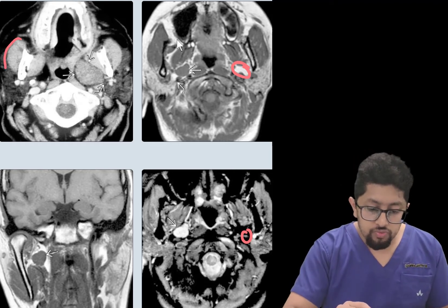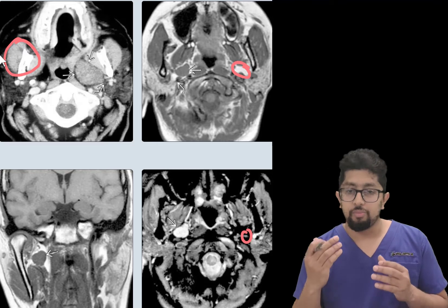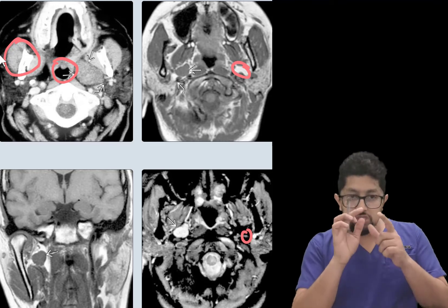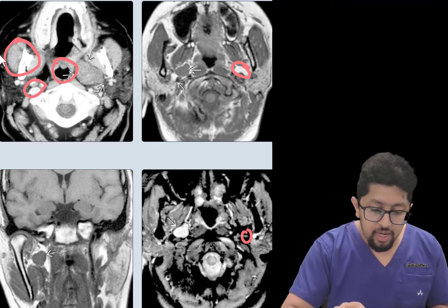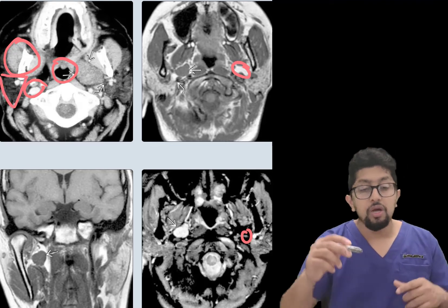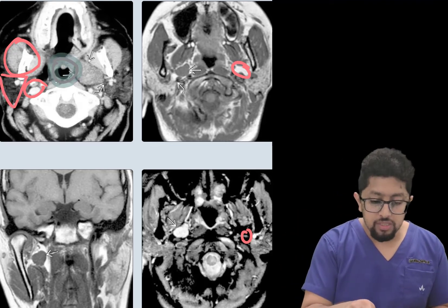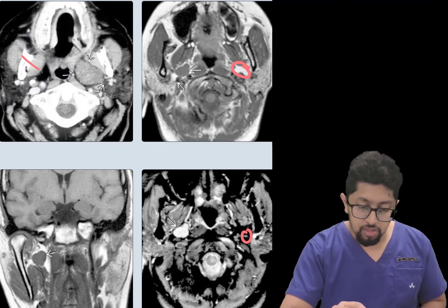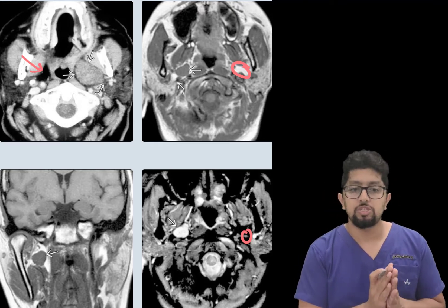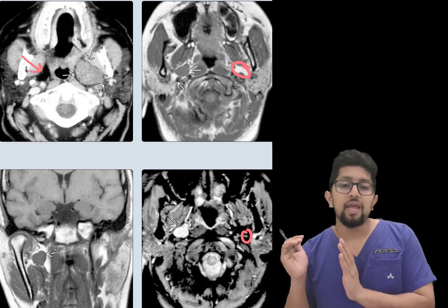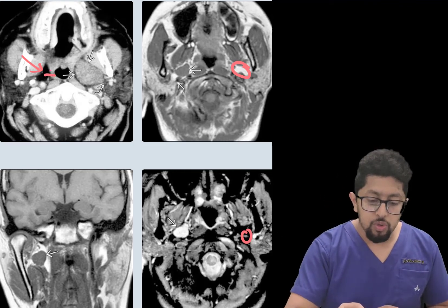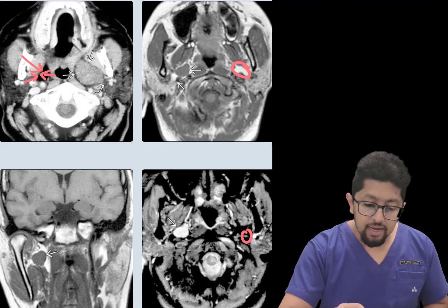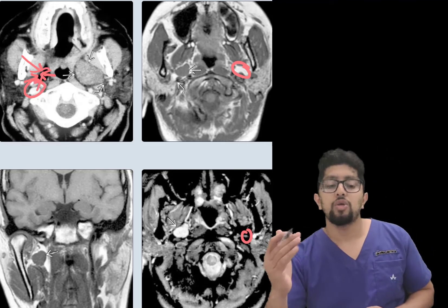Anterior to the parapharyngeal space is the masticator space, medially is the pharyngeal mucosal space, posterolaterally we have the carotid space, and laterally we have the parotid space. When there is a lesion in the masticator space, it pushes the parapharyngeal fat more medially and posteriorly. Similarly, the pharyngeal mucosal space pushes it laterally, the parotid space pushes it medially, and the carotid space pushes it anteromedially.